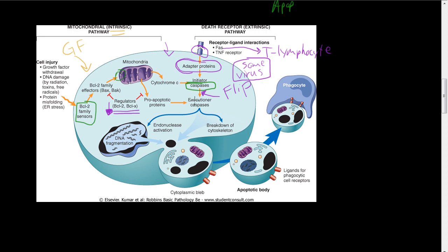If you didn't have this FLIP molecule, you'd keep going down the pathway and the executioner caspases would activate endonucleases, which go in and cleave all the DNA, causing the DNA to become fragmented. The caspases also activate enzymes that break down the cytoskeleton and break down the cell. You can see little buddings — called cytoplasmic blebs — that pinch off and create apoptotic bodies, which are then phagocytized by phagocytes.